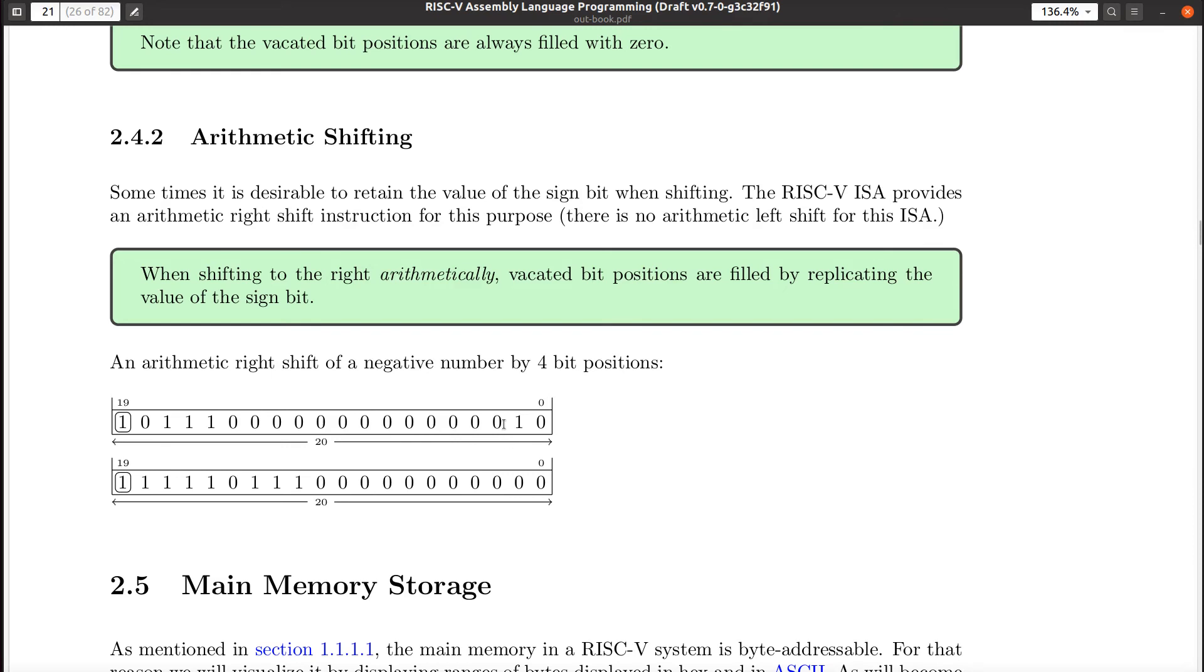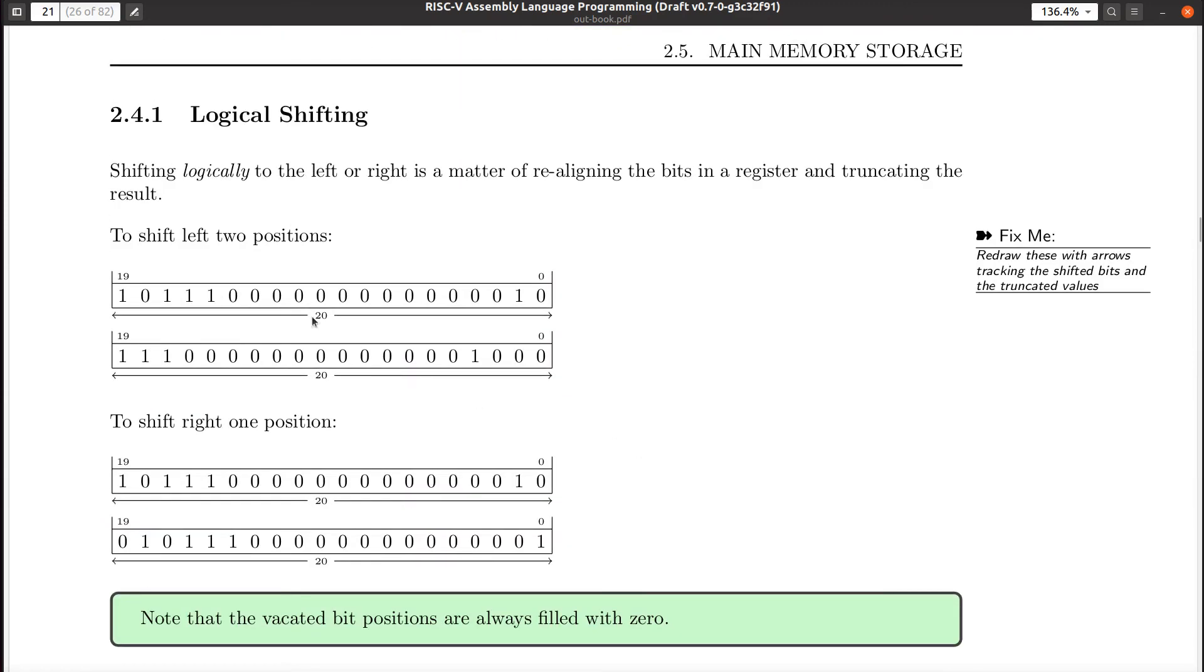Another thing that you see some CPUs doing is they have something called a rotate instruction. And in a rotate instruction, instead of throwing, if I said rotate left in that case, right, instead of throwing the bits away, right? This thing rotates left too. These two bits are thrown away, and I said the zeros come in over here. In a rotate, these two bits would wrap around and come back in over here, okay? So just so you realize, some CPUs have other operations as well as just shifting, okay?